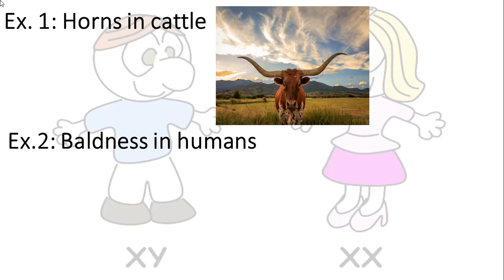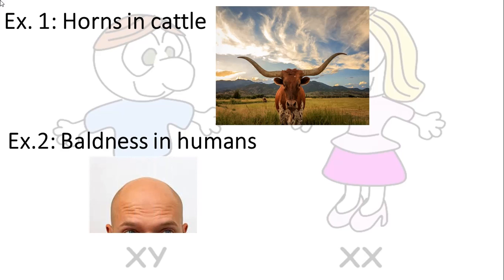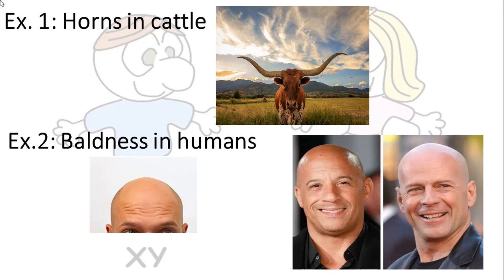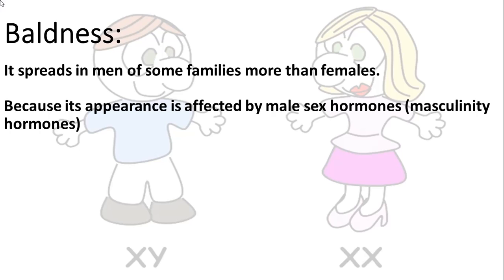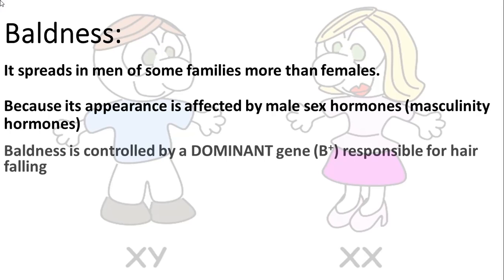The second example is baldness in humans. We can see it is very common in some families, and it spreads in men of some families more than females, because its appearance is affected by male sex hormones or masculinity hormones. Can we have a bald woman? Yes, we can, but the effect of baldness is not as clear as in men because it is affected by testosterone.